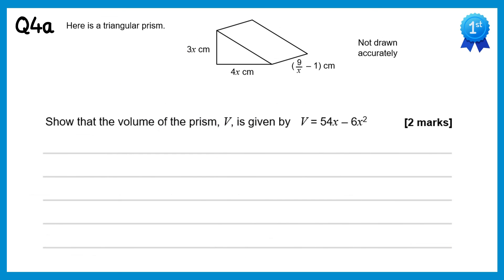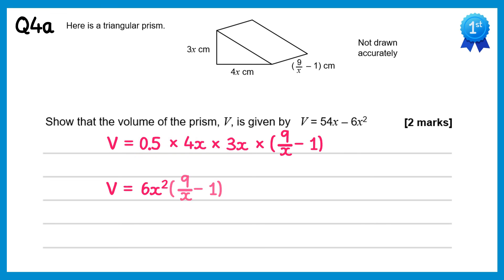In this question we need to find the volume of the triangular prism. To do that we'll use the area of the cross-section (a triangle) times the length. So the volume equals 0.5 times the base 4x times the perpendicular height 3x, times the length (9 over x take away 1). Multiplying the first three terms: 4x times 3x is 12x squared, and half of that is 6x squared, then times the bracket. Expanding: 6x squared times 9 over x gives 54x, and 6x squared times negative 1 is negative 6x squared. This is what we needed to show.